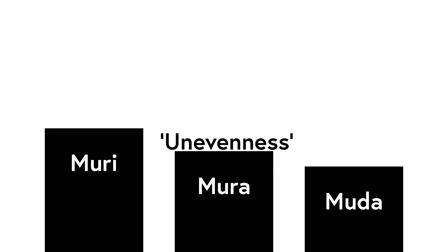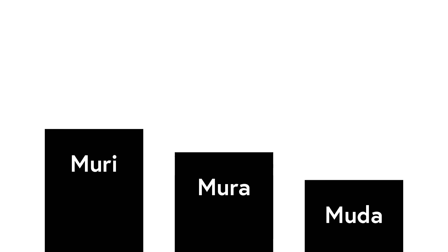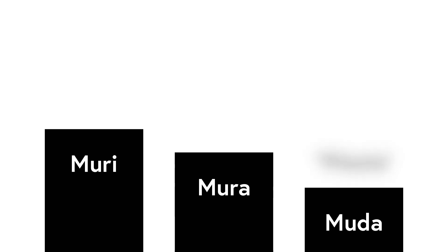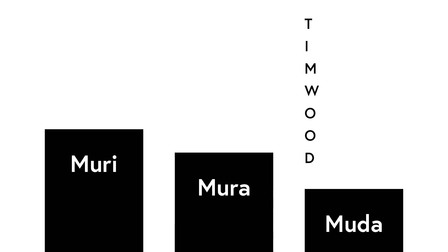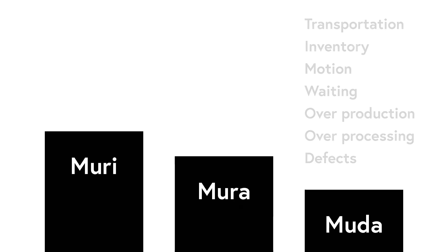Second, Mura, meaning unevenness or variation, always degrades the performance of a system and reduces flow. And finally, Muda or waste represents all activities that do not directly add value to the product. Such waste can be summarized with the memory jogger list TIM WOOD, which stands for Transportation, Inventory, Motion, Waiting, Overproduction, Overprocessing, and Defects.